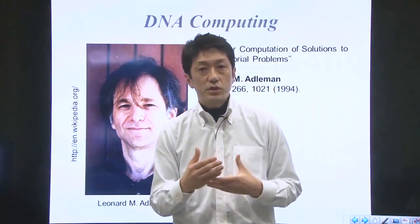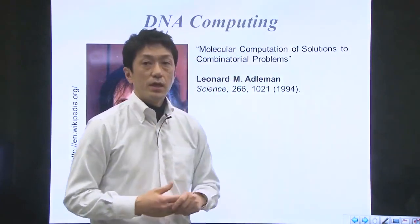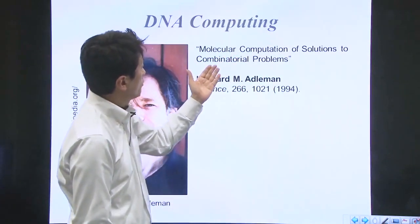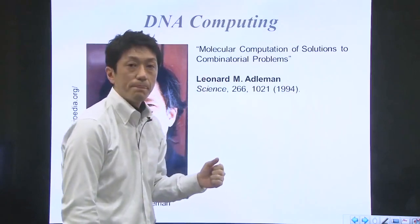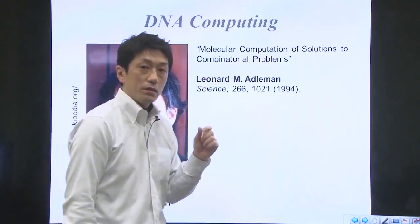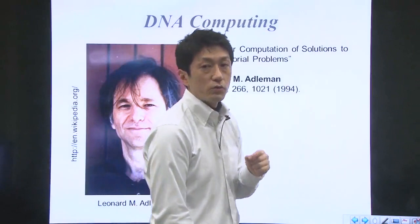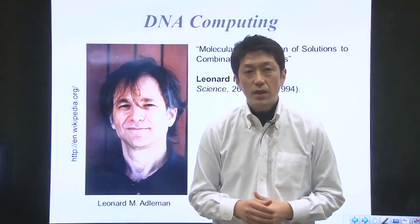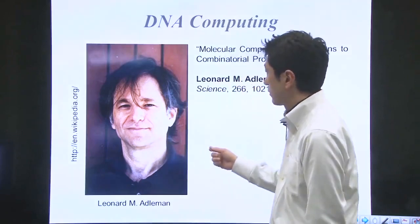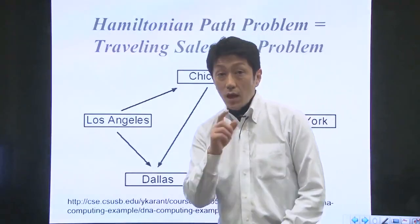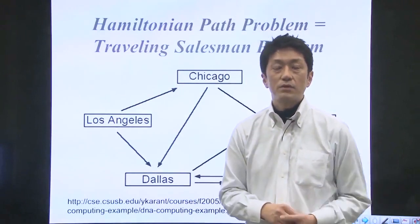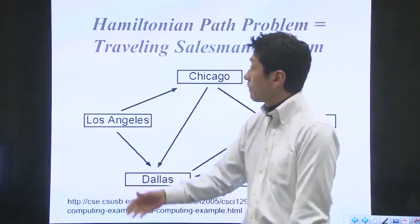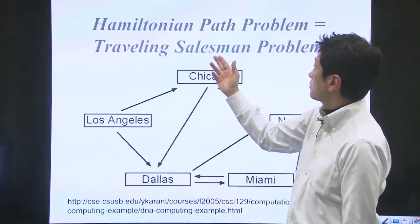The title of this proof-of-concept work was 'Molecular Computation of Solutions to Combinatorial Problems.' He demonstrated a use of DNA as a form of computation to solve a Hamiltonian path problem. The Hamiltonian path problem is a classical mathematics problem, also called the traveling salesman problem.